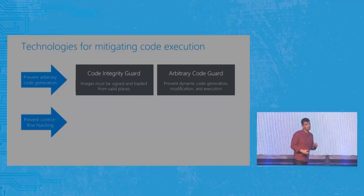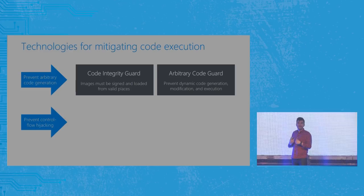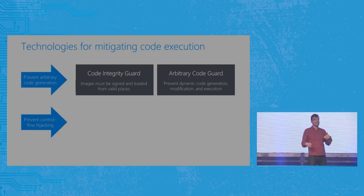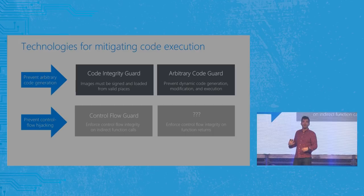We have two technologies today — Code Integrity Guard and Arbitrary Code Guard — that guarantee this on the Windows platform when applied. The second dimension: we want to ensure that even if you can't generate new code, you can't execute code out of order. You can't use ROP, JOP, COOP, or whatever the current term is for executing code out of order. Control Flow Guard enforces what we call forward control flow integrity — jumps, calls, etc.